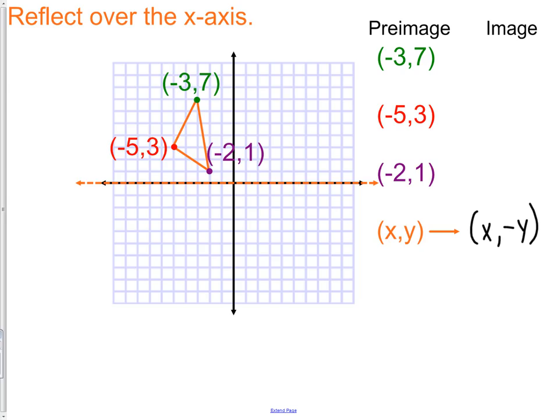Instead of being over (-2, positive 1), we're going to be over (-2, -1). Instead of being at (-5, positive 3), we'll be at (-5, -3). Instead of being at (-3, positive 7), we'll be at (-3, -7). Again, if we look at this, it should look exactly like the same triangle, just that it's been reflected.